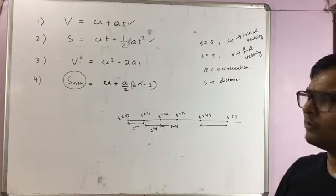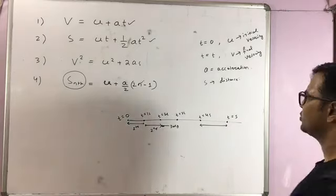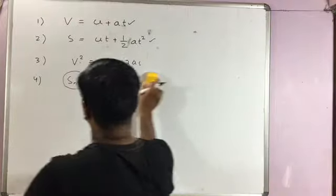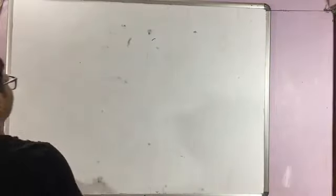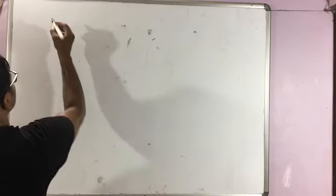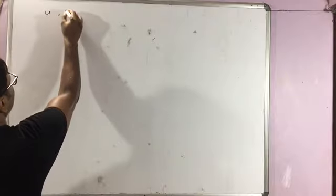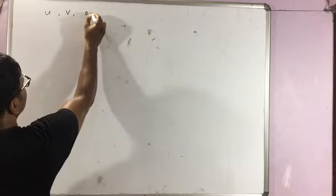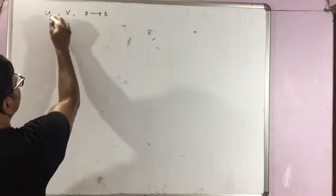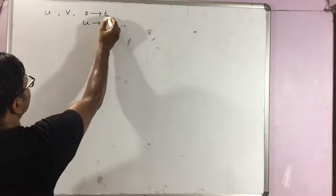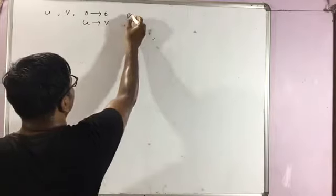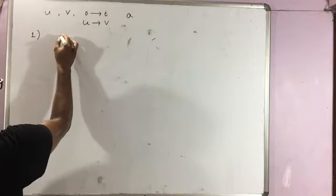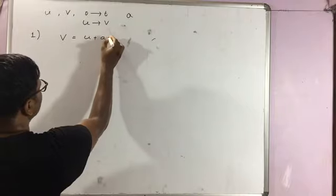Now these are the equations we need to prove using calculus. Let us start with the first equation. The quantities are: u is the initial velocity, v is the final velocity, time starts from 0 and ends at t. When time is 0, the speed is u; when time is t, the final velocity is v, and the acceleration is a. We need to prove v = u + at.